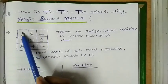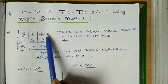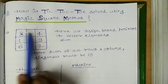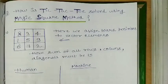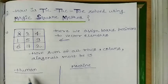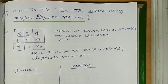If you take columns like 8, 1, 6 or 3, 5, 7 or 4, 9, 2, the sum must be 15. So this is the magic square. You have to assign board positions like this only.